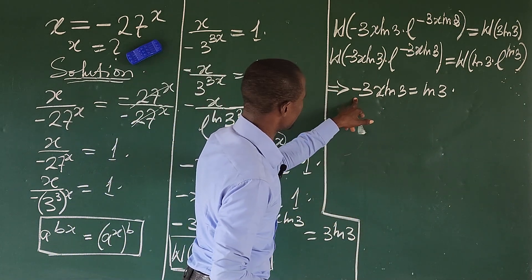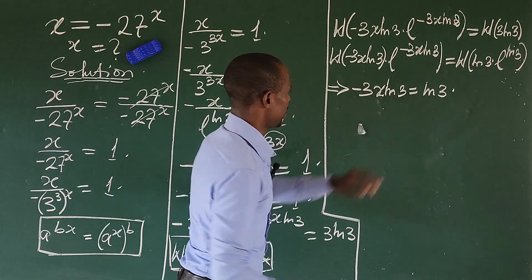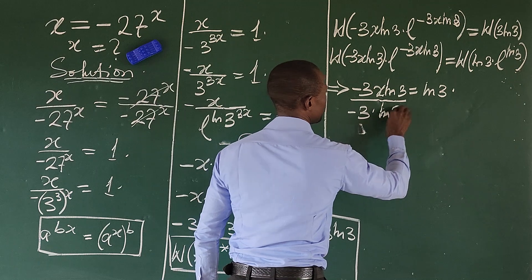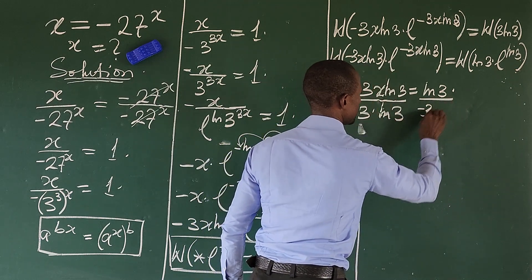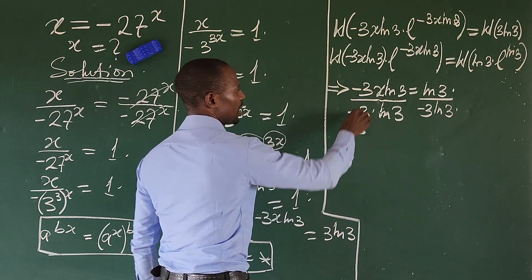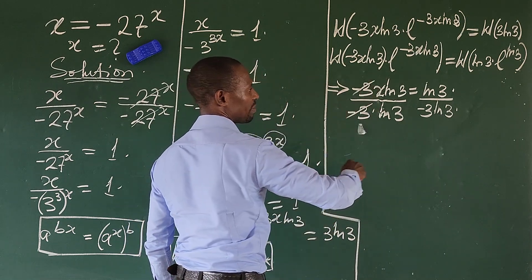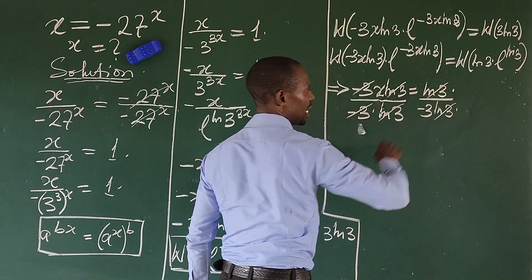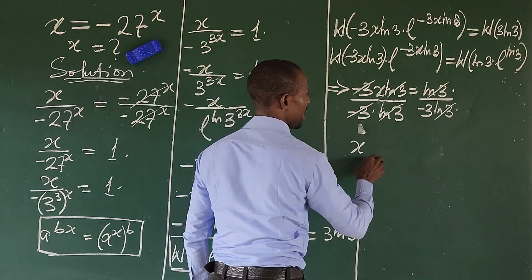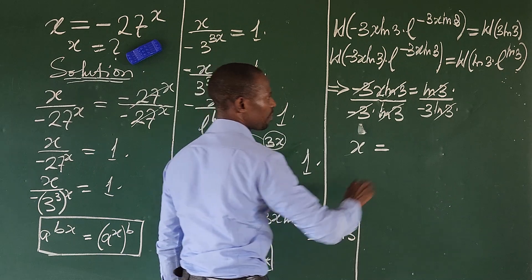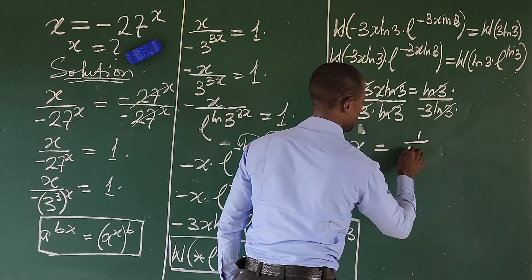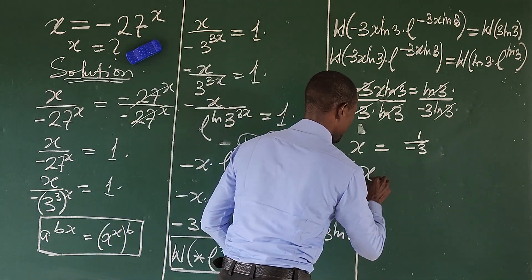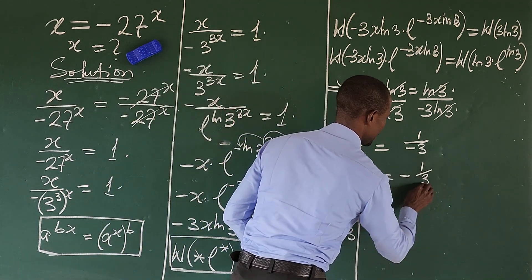We're looking for x, so we divide both sides by minus 3·ln(3). The minus 3 cancels with minus 3, and ln(3) cancels with ln(3), leaving us with x equals 1 over minus 3, which means x equals minus 1 over 3.